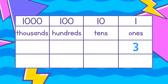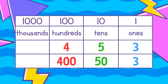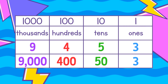A 3 in the ones place is worth 3. A 5 in the tens place is worth 50. A 4 in the hundreds place is worth 400. A 9 in the thousands place is worth 9000.